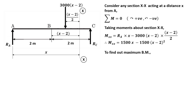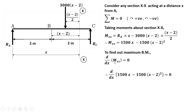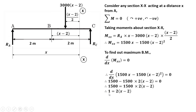To find the location of maximum bending moment, we differentiate Mxx with respect to x and equate to zero. The derivative gives 1500 minus 1500 times 2(x minus 2) equals zero. Cancelling 1500, we get 1 equals 2(x minus 2), so x minus 2 equals 0.5, giving x equals 2.5 meters from A, or 2500 mm from A. This is our first answer.